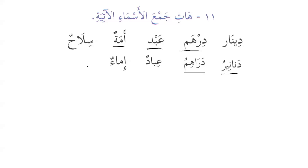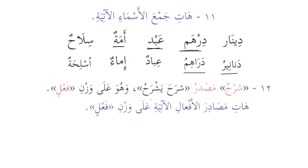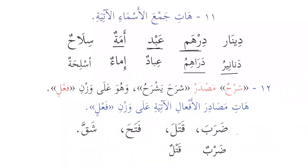'Silahun' — weapon — and its plural is 'aslihatun.' Then 'sharhun' — it is on the pattern of 'fiilun' — so we provide the masdar on the same pattern: 'daraba' becomes 'darbun,' 'qatala' becomes 'qatlun,' 'fataha' becomes 'fathun,' and 'shakka' becomes 'shakkun' after applying idgham — because the two identical letters merge with a tashdeed, changing 'shakkun' into 'shakkun,' meaning to crack or cleave something.